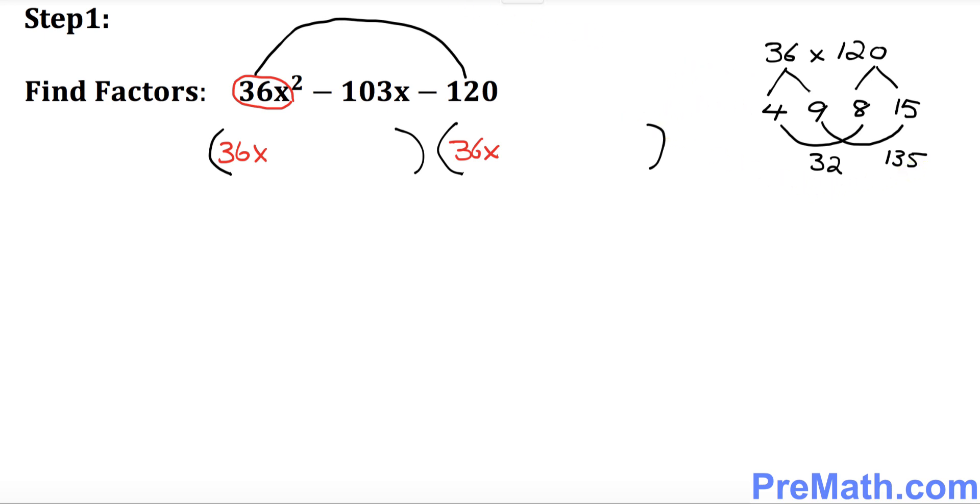Why? Because we are looking for the middle number, which is what? Negative 103, isn't it? And now if you subtract these numbers, you're going to get negative 103. So the next thing what we're going to do is we're going to put the appropriate sign.